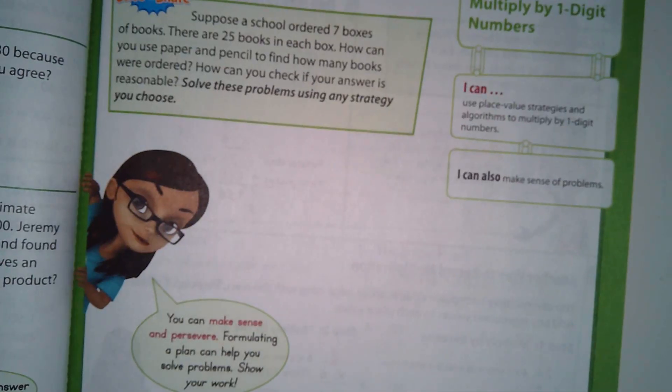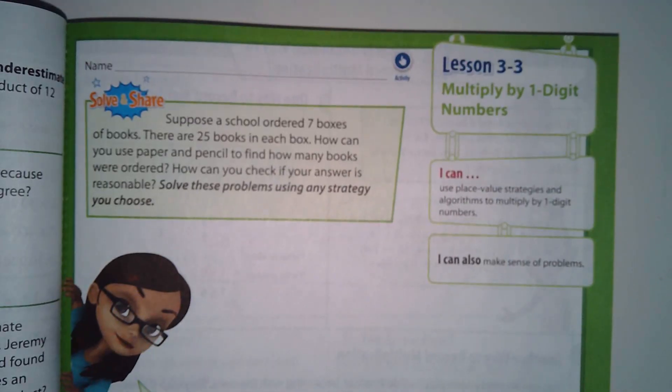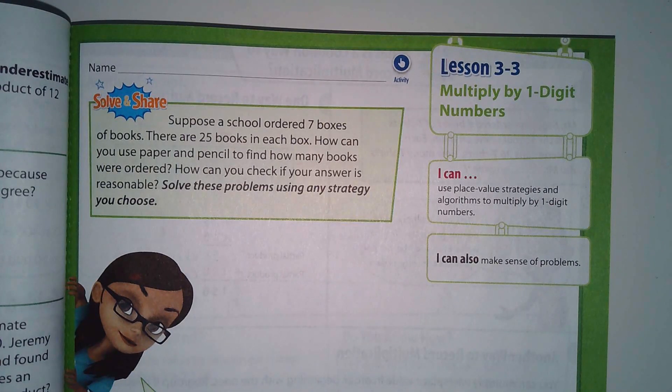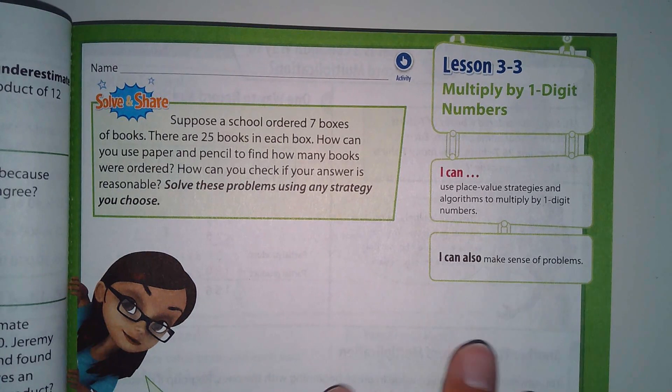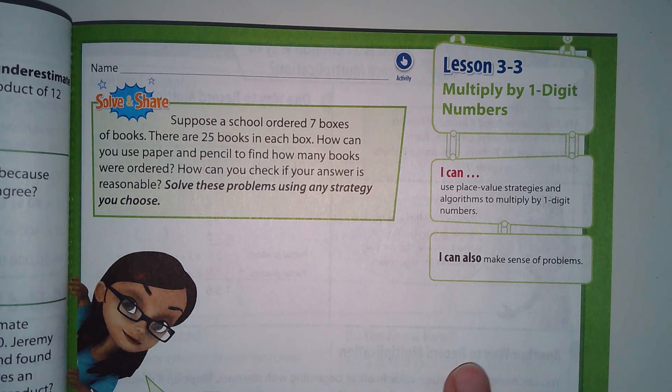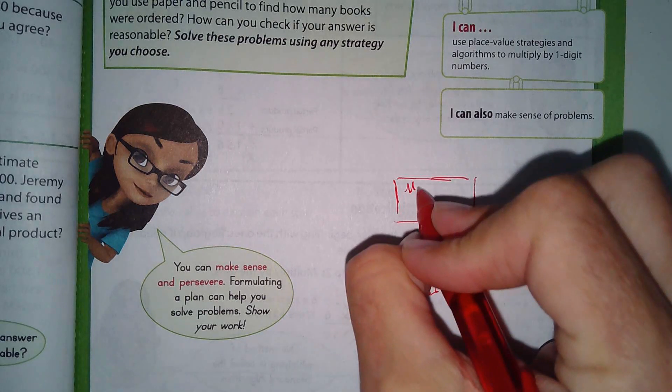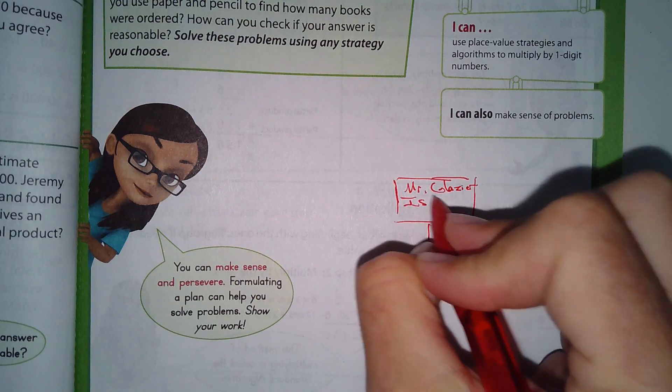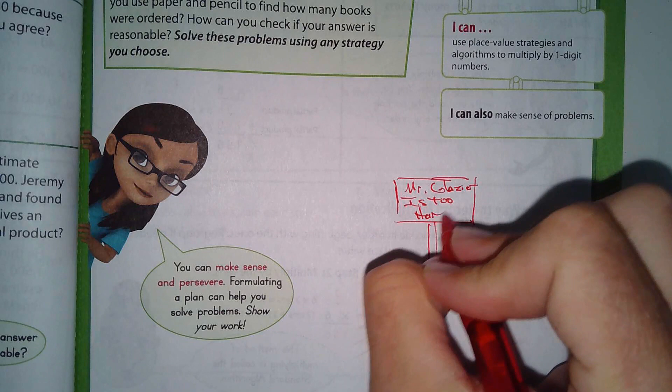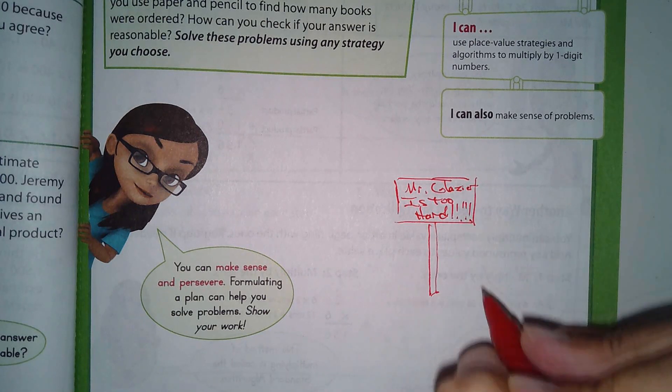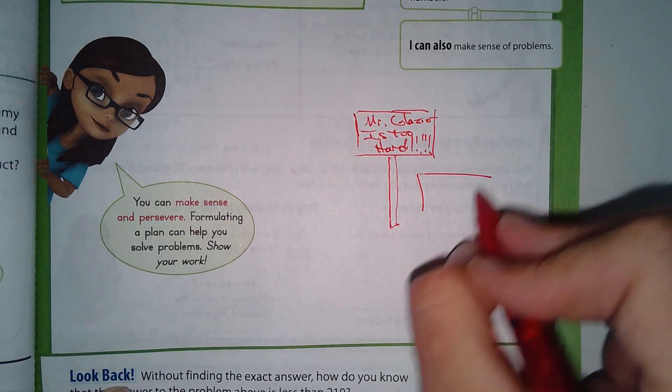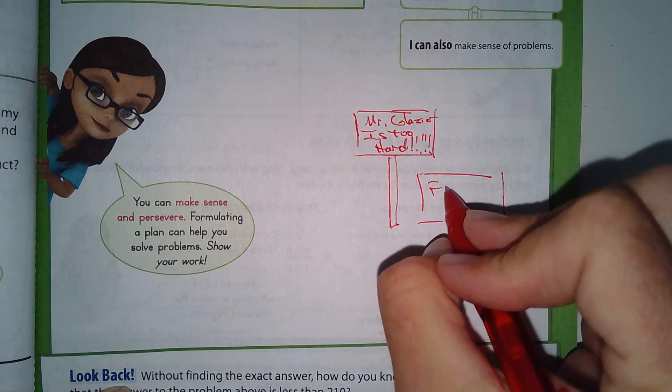Now let's jump into lesson 3-3. This is going to be a really difficult lesson for some of you because you're multiplying by a single-digit number. I know, I know. So listen, you guys can all go home tonight and make yourselves a banner, and on it you can write 'Mr. Glazier is too hard' exclamation, over and over, and then somebody could do another sign that says 'Fire Mr. G.'